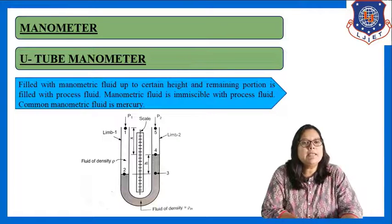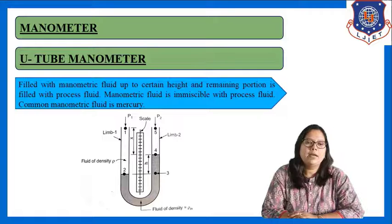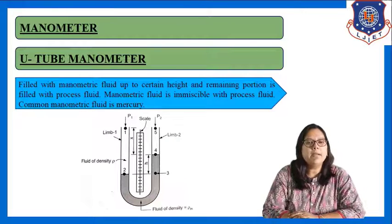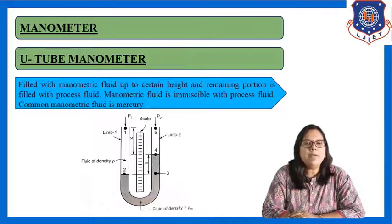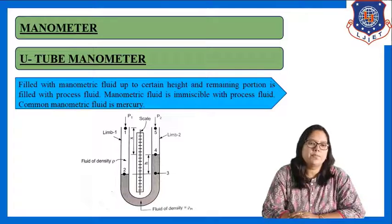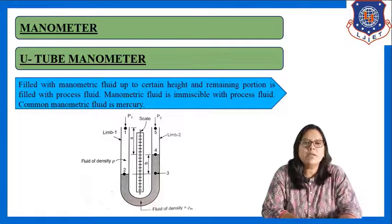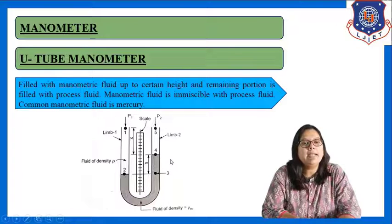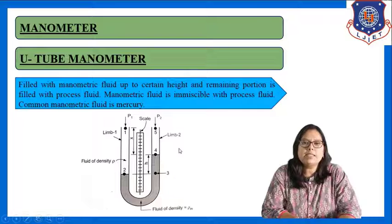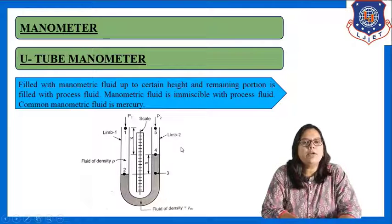What is the basic selection criteria for selecting manometric fluid? The manometric fluid must be immiscible with the process fluid — that is our primary requirement. Because if it is miscible with the process fluid, we cannot easily identify the height difference. The common manometric fluid which is used is mercury.